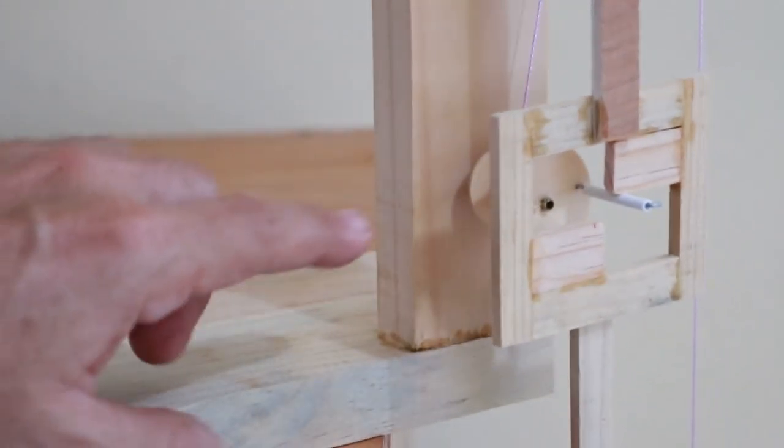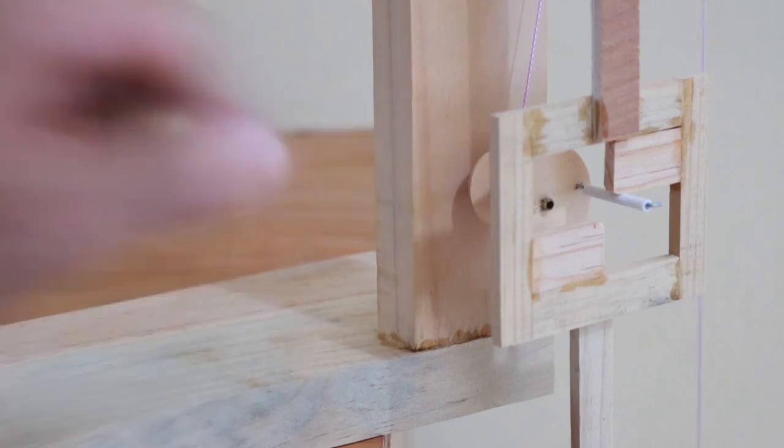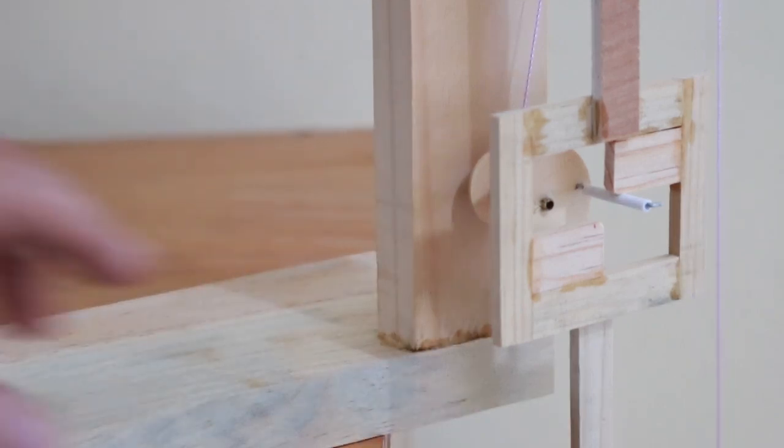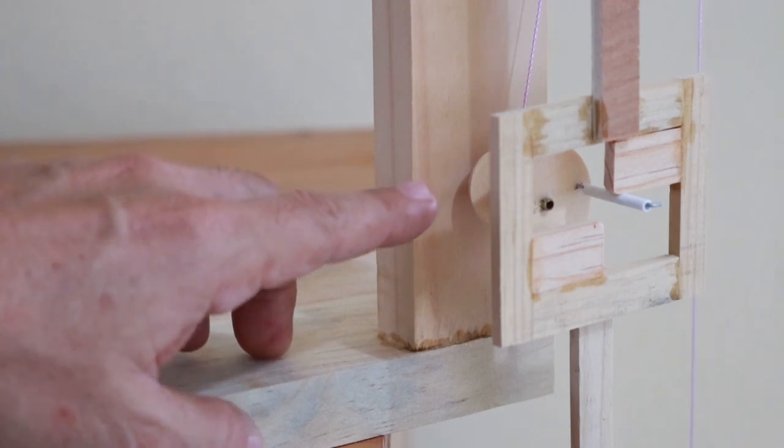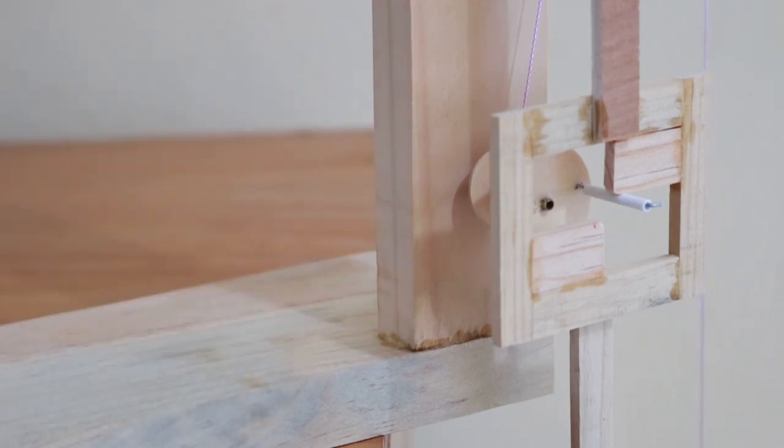To have a functional clock, you will need to add a set of gears to the main wheel to reduce the speed enough for the hour hand, and also another set of gears for the minute hand.